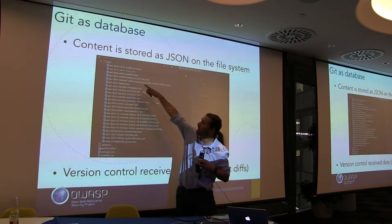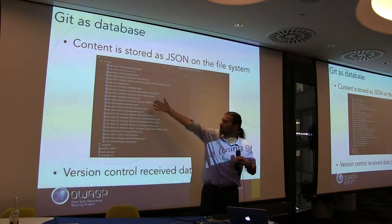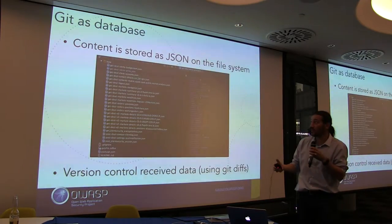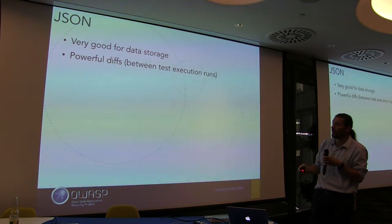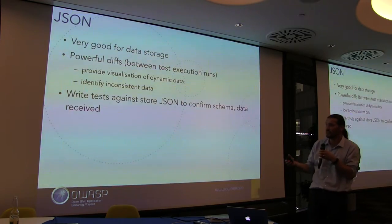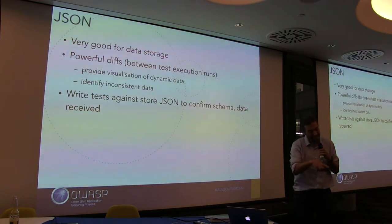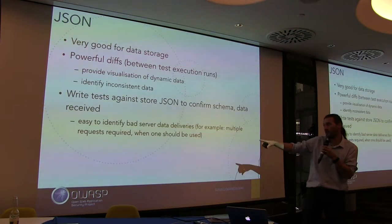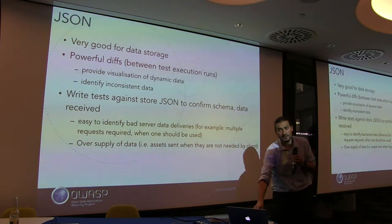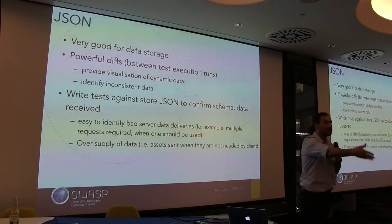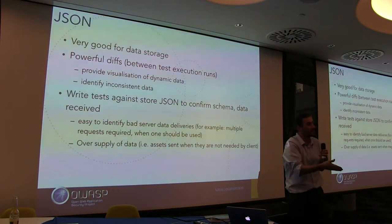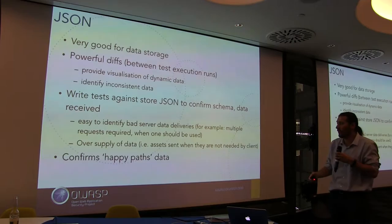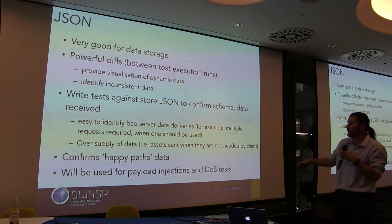It's funny because when you look at this you can already see a bit of a salad on the methods. When you talk to the developers about that, they say 'yeah, because we really would like a dedicated service but we have to use that service over there.' I like JSON: you can store it, you can diff it, you can visualize it, identify consistent data, write tests against JSON to confirm the schema, identify bad data deliveries, multiple requests where one should be used, and oversupply of data. A lot of clients get way too much data — if you don't need it, don't send it.